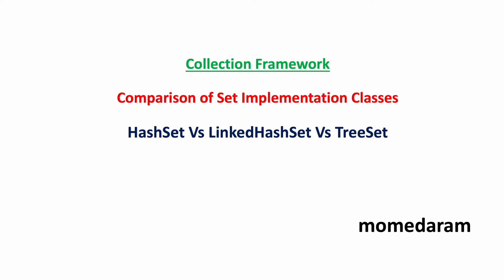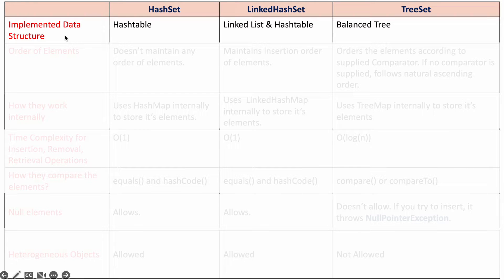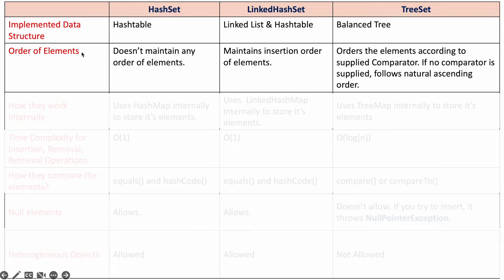In this video we will see the comparison of set implementation classes. The set implementation classes are HashSet, LinkedHashSet, and TreeSet. HashSet is implemented based on the data structure HashTable. LinkedHashSet is implemented based on LinkedList and HashTable. TreeSet is implemented based on a balanced tree data structure.